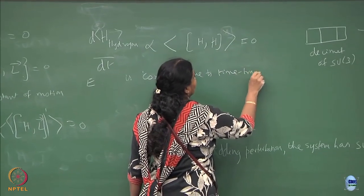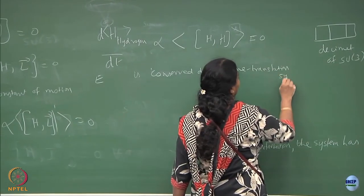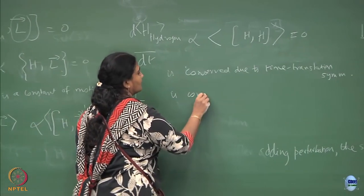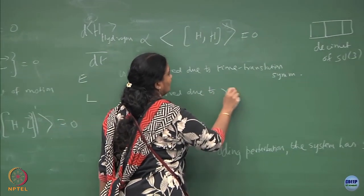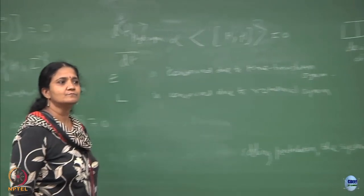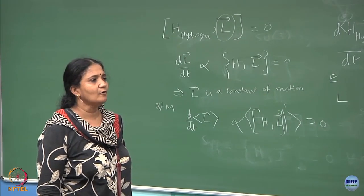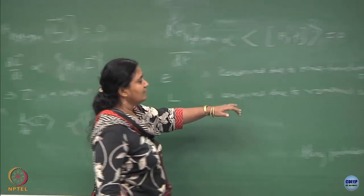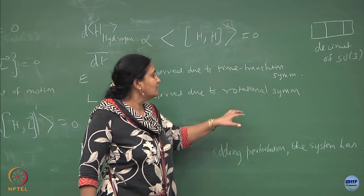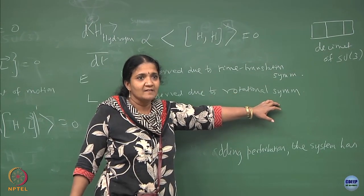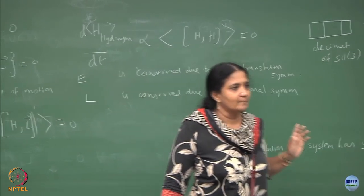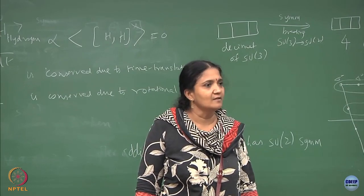Energy is conserved due to time translation symmetry, just like L is conserved due to rotational symmetry. These are the conserved quantities in the problem, and you can associate a geometric meaning — in the time coordinate there is a translation, and in physical xyz space there is a rotation. This is why the hydrogen atom has both time translation symmetry and rotational symmetry.